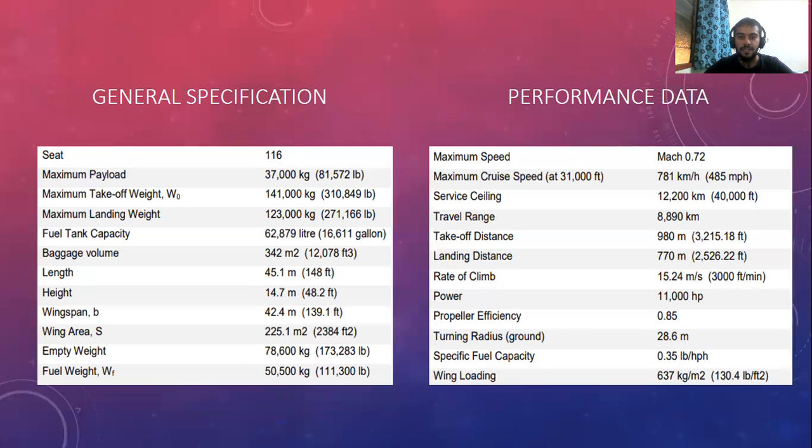These are the specifications and data of this aircraft. On the left side is the general specification, and on the right side is the performance data, including the maximum speed, cruise speed, ceiling, range, and others.